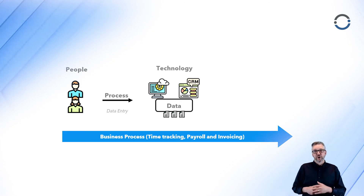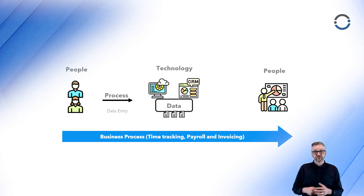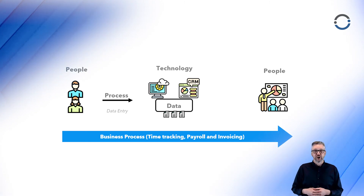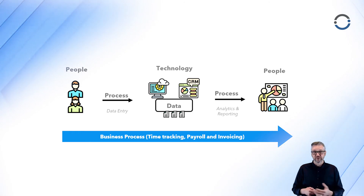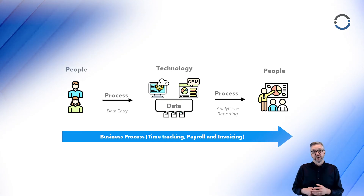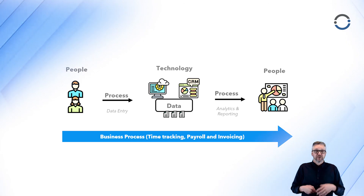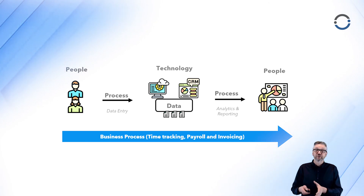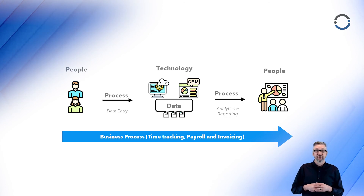The data consumers are on the far right-hand side. These are processes like doing payroll — paying employees on time and accurately — and invoicing our clients. In the middle of the month, maybe we want to understand how well we're progressing toward our targets: did we get some additional business, did some business drop off? Having access to timely and accurate data will pay dividends as we're trying to understand how well our business is performing.